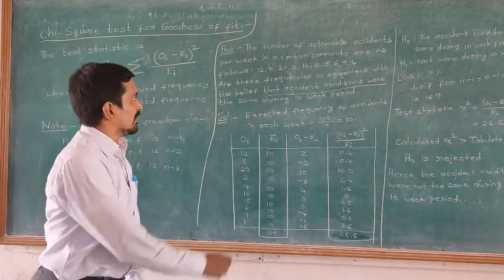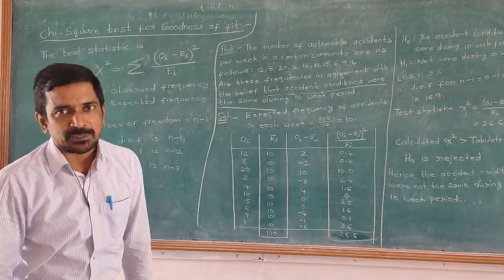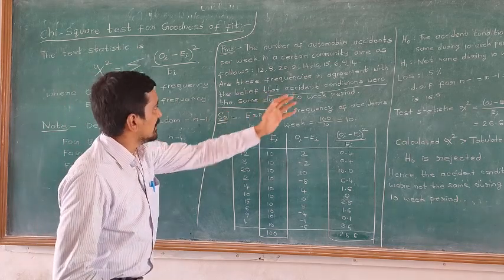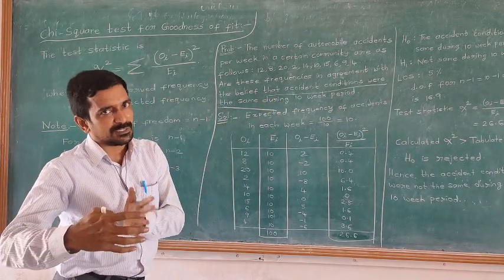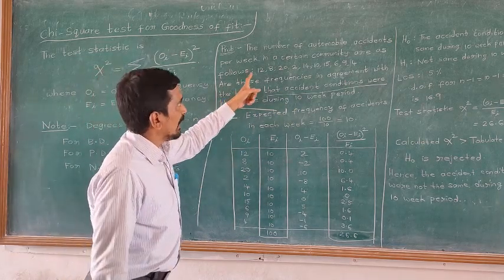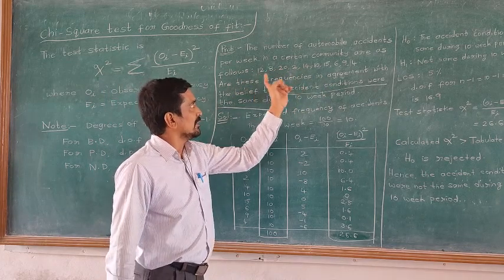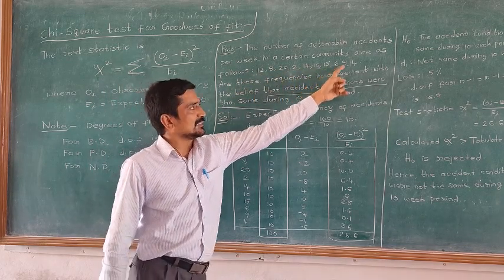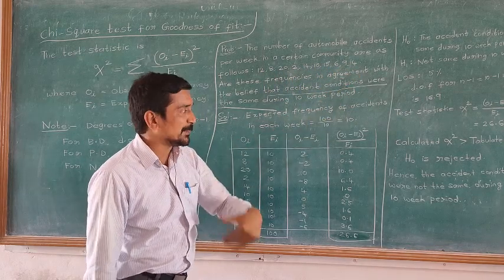We need to verify that the accident conditions are the same in that particular 10-week period. The observed values are already there: 8, 22, 14, 10, 15, 6, 9, 4. Now we need to calculate the expected frequency.